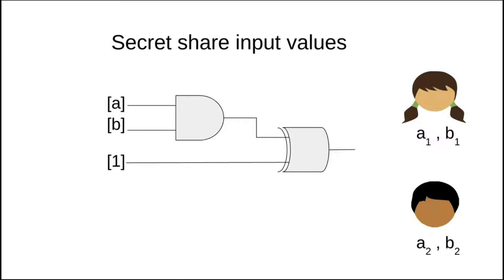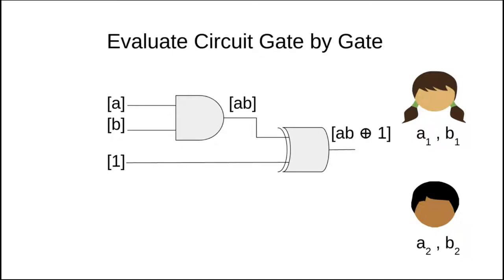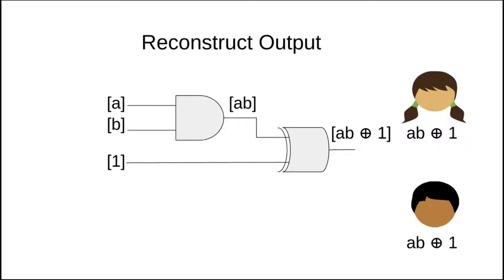Alice and Bob now each hold one XOR share of A and one XOR share of B. Alice and Bob next evaluate the circuit gate by gate and compute valid XOR shares on the output wires of all gates. At the end of the evaluation, Alice and Bob each hold a share of AB XOR 1 on the circuit's output wire. The only remaining step is to reconstruct the output.